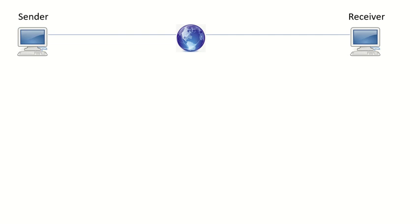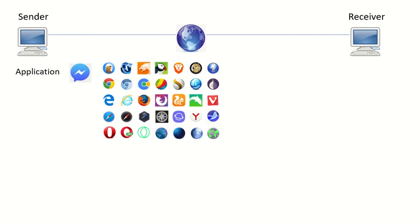Today our discussion will focus on the sender's point of view. To begin with, we start at the Application Layer. The Application Layer is the closest layer to the end user — it is where the end user interacts with different types of applications to send a text file or a video over the network. Network applications can be Facebook Messenger, or any web browser such as Google Chrome or Mozilla Firefox.